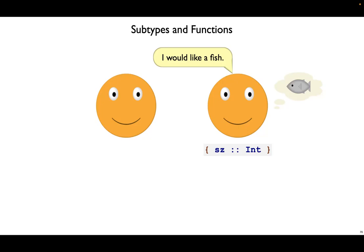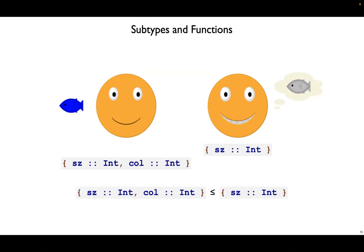Bob would like a fish, and for our example we'll say that a fish is a record that has an sz field for its size and the size is an int value. If Alice gives Bob a blue fish, which has both a size and a color, Bob will be happy because he got a fish. This blue fish will work out any place where Bob is going to use a plain fish.